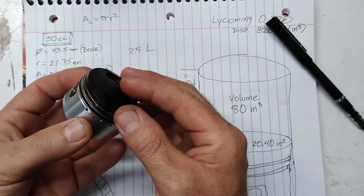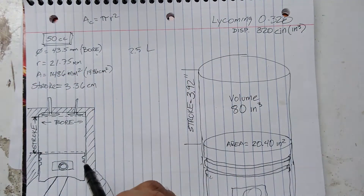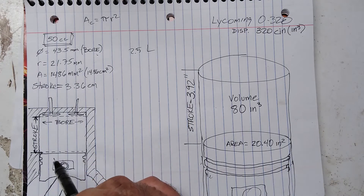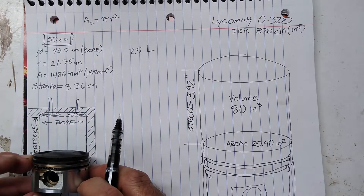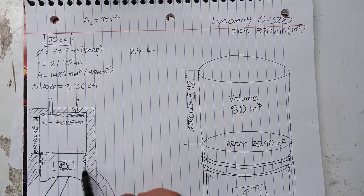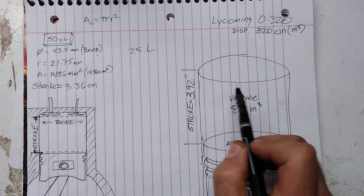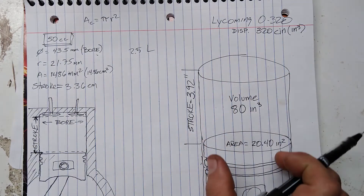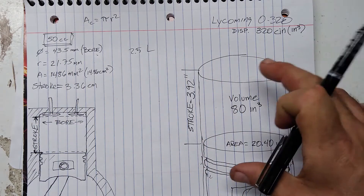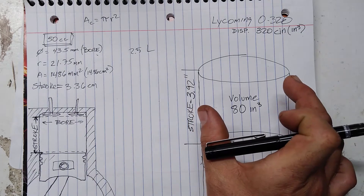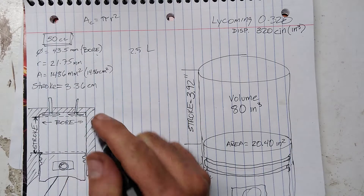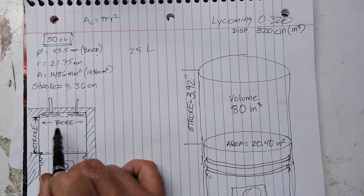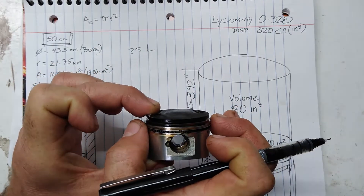What volume is that 50cc's referring to? This would be looking at a cutaway, a side view of a piston in an engine cylinder. In an engine you have a piston, which rides up and down inside of a cylinder. A cylinder, quite literally, is a cavity for the piston to move up and down in. The volume of that cylinder is what determines the size of the engine.